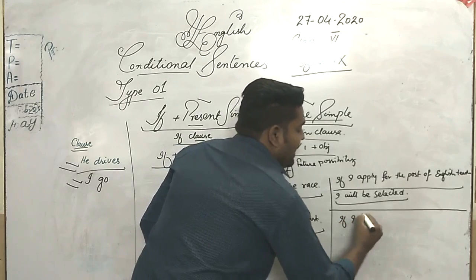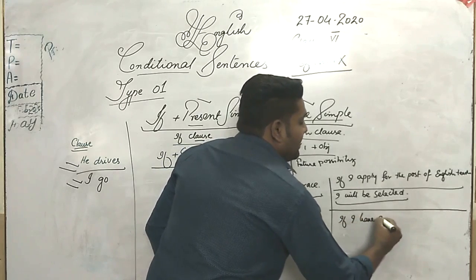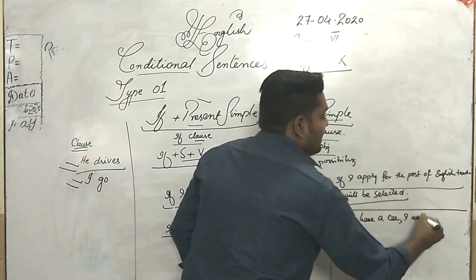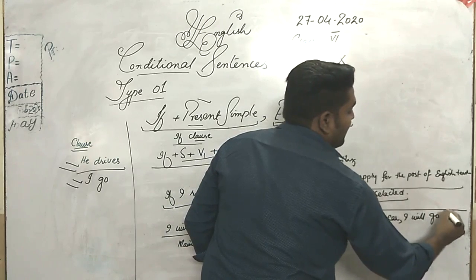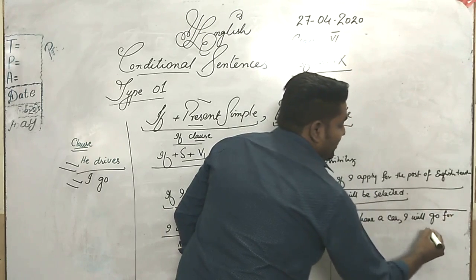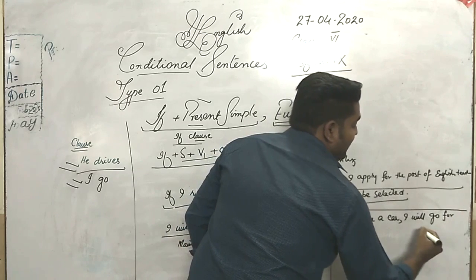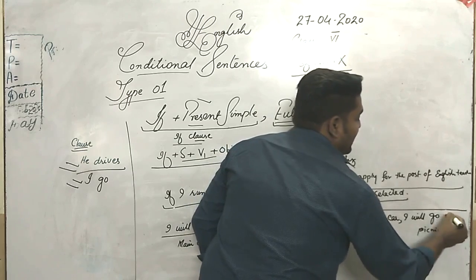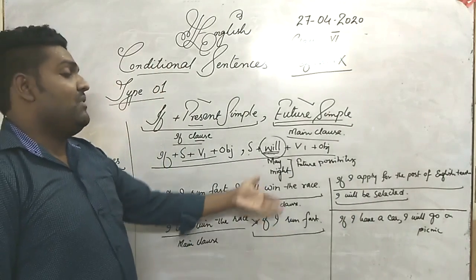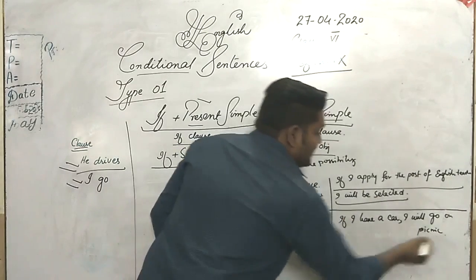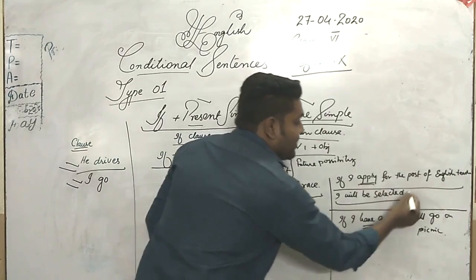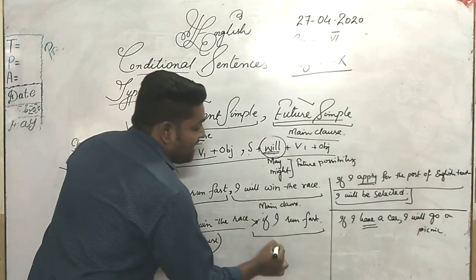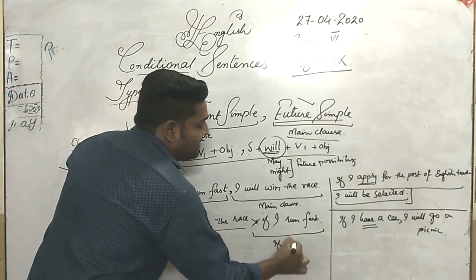You can also make sentences with stative verbs. For example: 'If I have a car, I will go on a picnic.' So these are the conditional sentences you can make — with stative verbs, with action verbs, in the passive, and you can also write the main clause first and the if clause after.